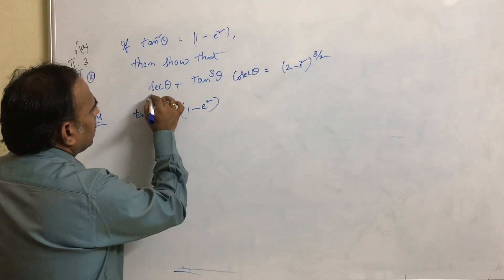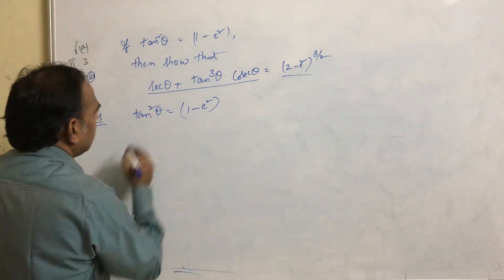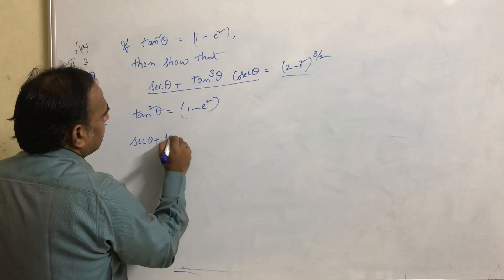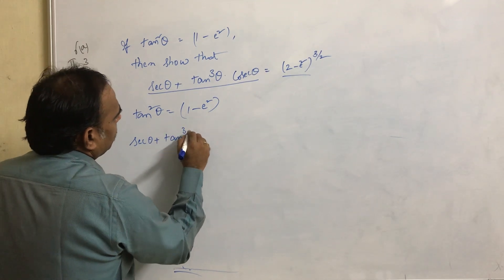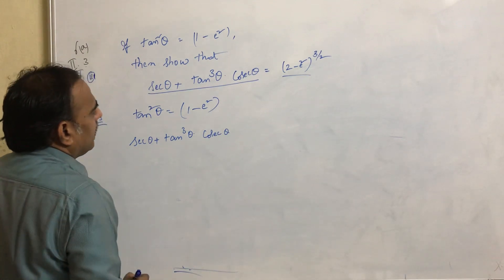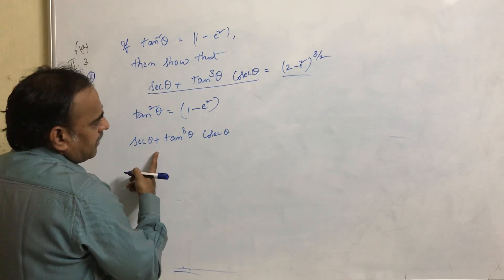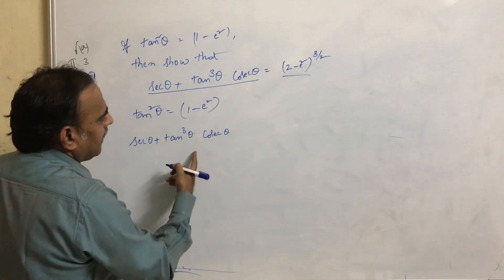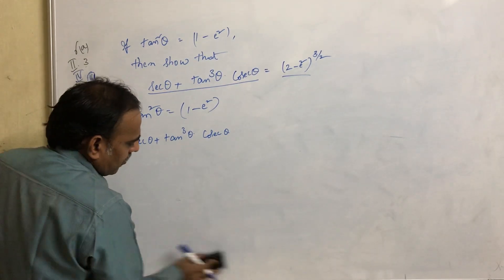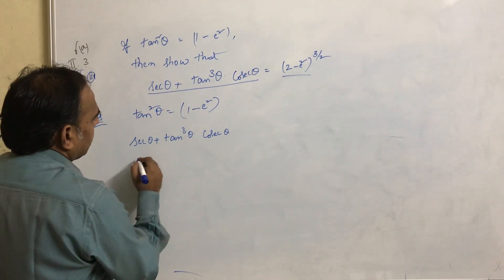We need to show that this equals this. Take LHS: secant theta plus tan cubed theta into cosecant theta. Simplify this equation — we will get some value. That's why first simplify this equation.